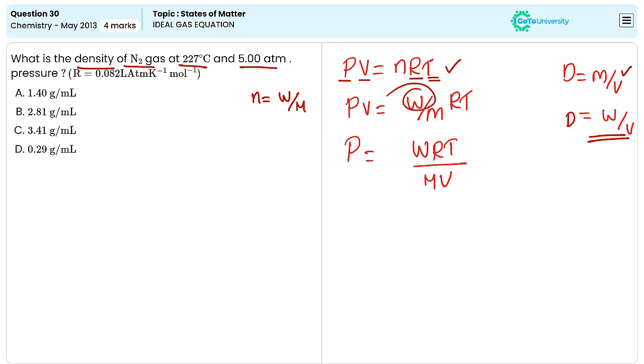Now, we can substitute the value of density in this equation, that is P equals DRT divided by M. Now, we need to rearrange this equation for the value of density, that is PM divided by RT.